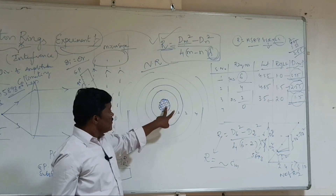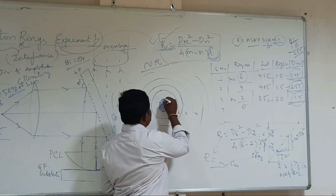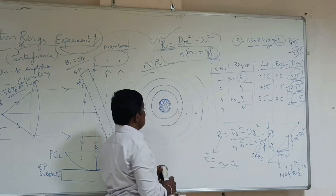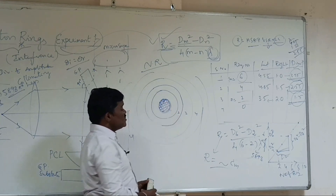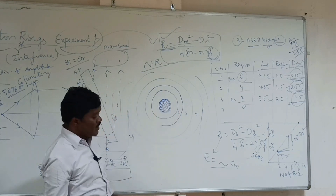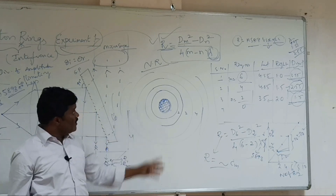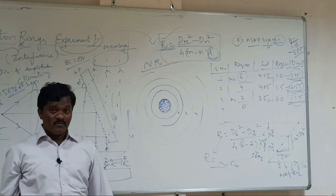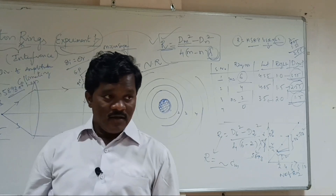So the center one is dark, and from this you can understand the concept. You can find the R value. Thank you very much.